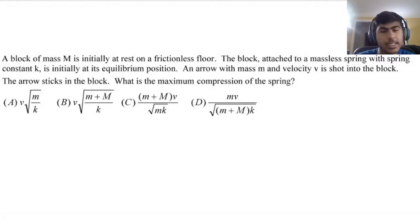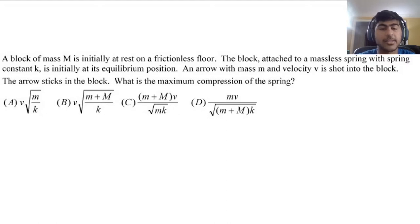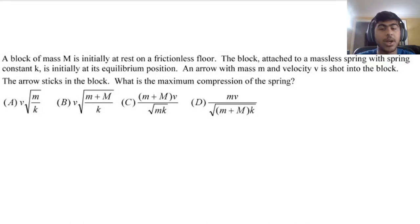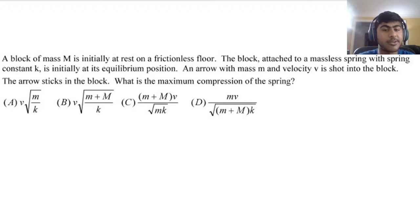A block of mass M is initially at rest on a frictionless floor. The block, attached to a massless spring with spring constant k, is initially at its equilibrium position. An arrow with mass m and velocity v is shot into the block. The arrow sticks in the block. What is the maximum compression of the spring?